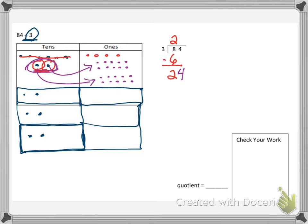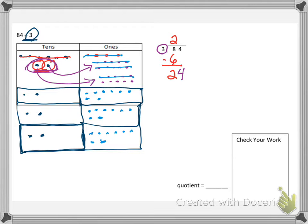So if I bring down my 4, that's exactly what I have now — I have 24 ones — but I have to split them up into 3 equal groups. Let's split them up: 1, 2, 3, 4, 5, 6, 7, 8, 9, 10, 11, 12, 13, 14, 15, 16, 17, 18, 19, 20, 21, 22, 23, 24. Well, would you look at that — we are actually even. There's nothing left over. We were able to use all of the ones. There are 8 in each group, and 3 groups of 8 is 24.